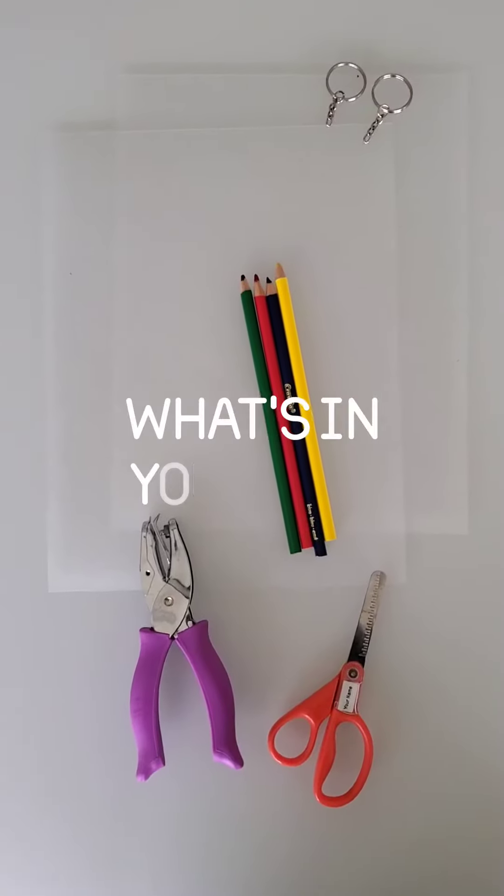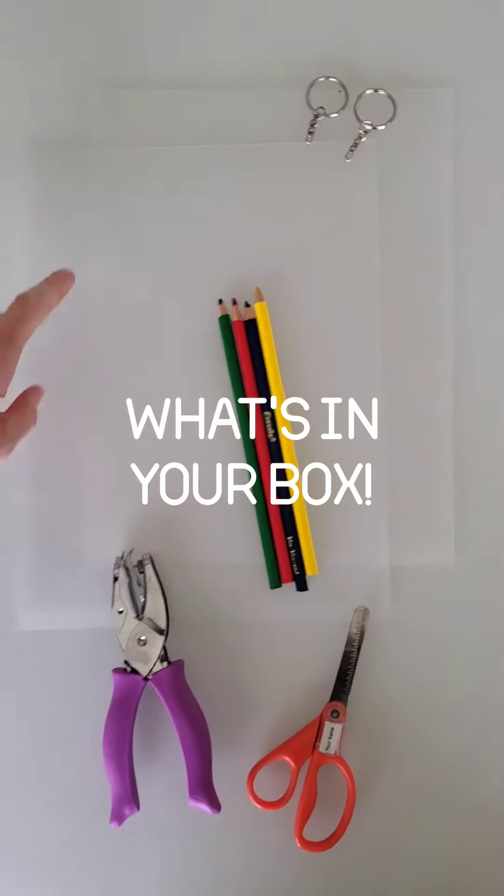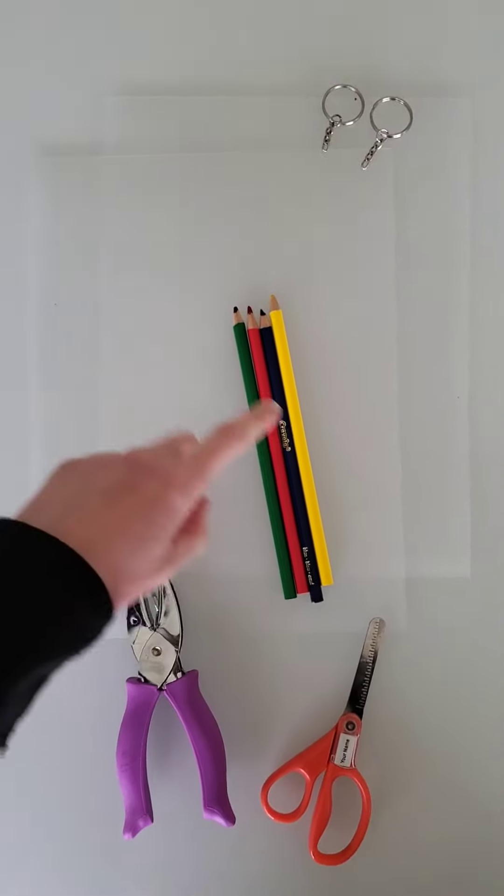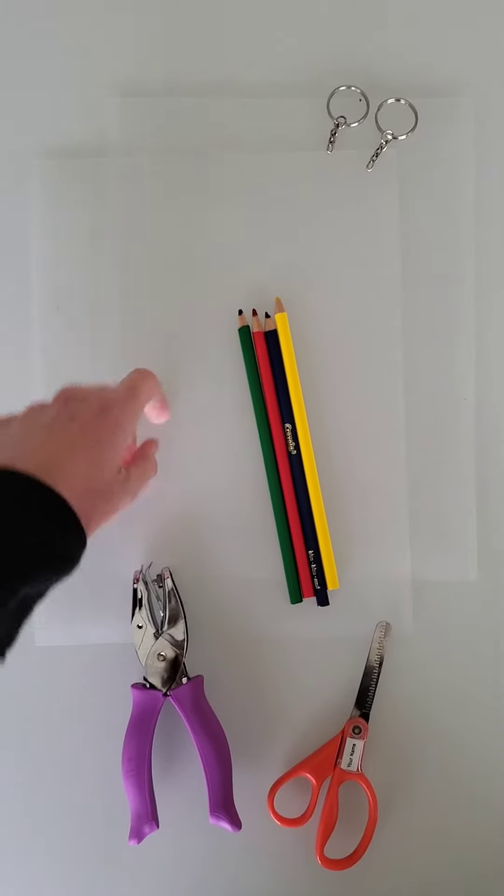In your shrink paper project kit, you'll get two pieces of shrink paper, four pencils to color (colors will vary), and two little keychains.